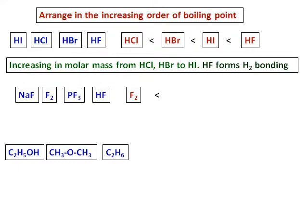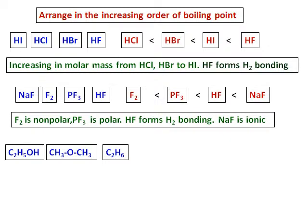The next set: fluorine will have the lowest boiling point because it is non-polar. Then we have PF3, because it is polar. Then comes HF, because it can form hydrogen bonding. But hydrogen bonding is not as strong as an ionic bond, so sodium fluoride tops the list with the highest boiling point. So wherever ionic bonding is present, it overrides hydrogen bonding and gives a higher boiling point.